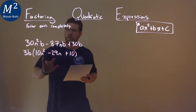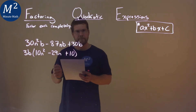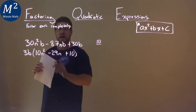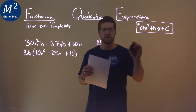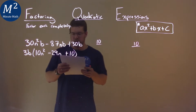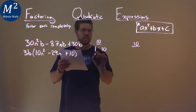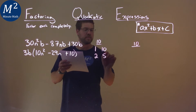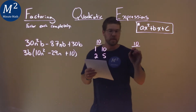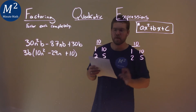So now I have a quadratic inside the parentheses, and I'm really just going to think about that. Our a value is 10, and our c value is also 10. 10 can be 1 times 10, or 2 times 5. Same thing here — 1 times 10 and 2 times 5.